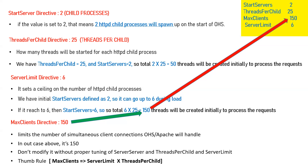The thumb rule is: MaxClients should equal ServerLimit multiplied by ThreadsPerChild. Here ServerLimit=6 and ThreadsPerChild=25, so 6×25=150. If you define MaxClients as 300 while ServerLimit is still 6 and ThreadsPerChild is still 25, it will not work — the server will still process only 150 requests. To increase MaxClients to 300, you must increase ThreadsPerChild to 50, because 6×50=300.